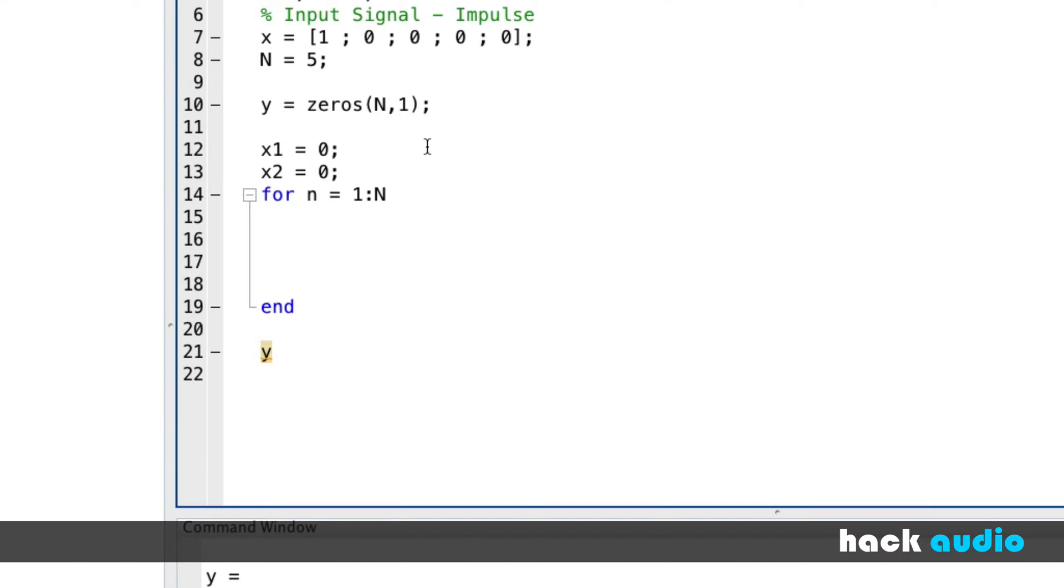And that represents a sample that has two samples of delay. So a sample with one sample of delay. So it's just an individual value. And this one is two samples of delay.